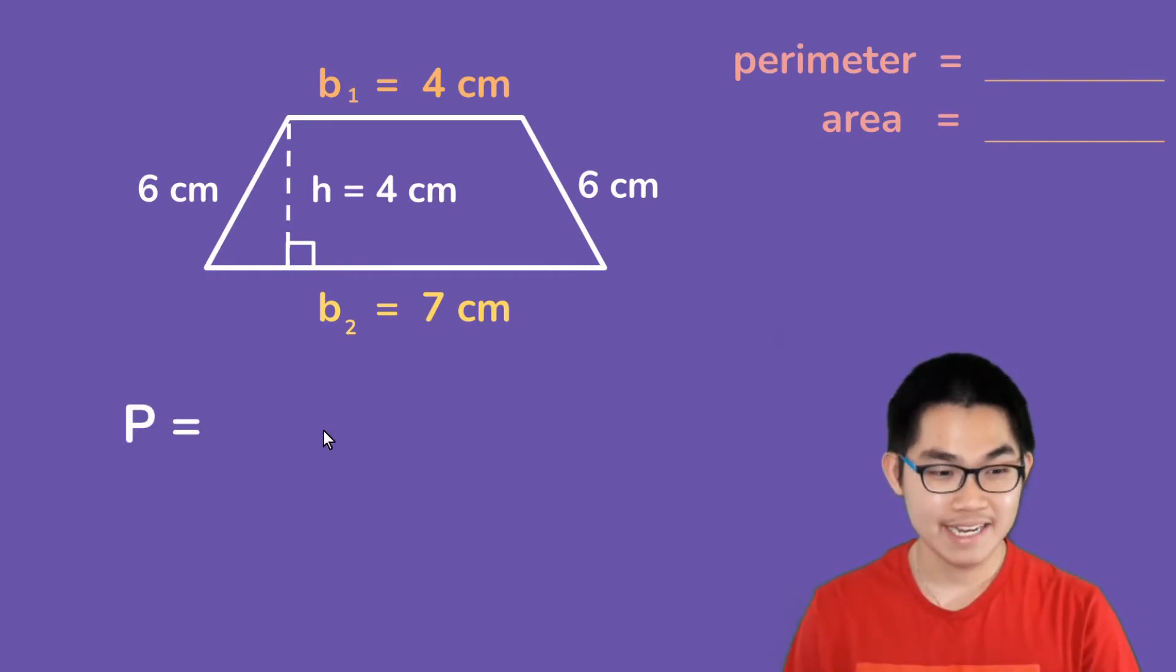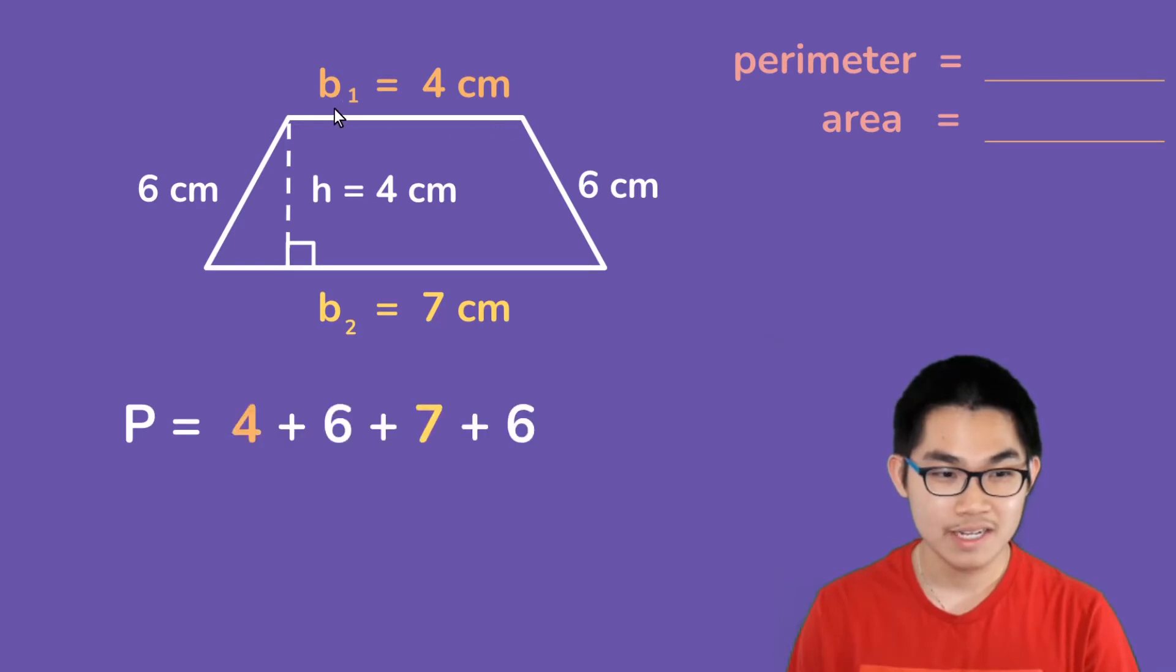So, how do we find the perimeter of the trapezoid? Well, remember, the perimeter is just the sum of all the sides added together. So, the perimeter is 4 plus 6 plus 7 and plus 6 again.